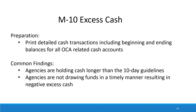The next test is going to be excess cash. Please print detailed cash transactions including beginning and ending balances for all OCA-related cash accounts. What we need is a general ledger trial balance that lists the beginning balance, the transactions by date throughout the month, and an ending balance. Some of the things we find are that agencies are holding cash longer than the 10-day guidelines, and/or agencies are not drawing funds in a timely manner, which results in negative excess cash.